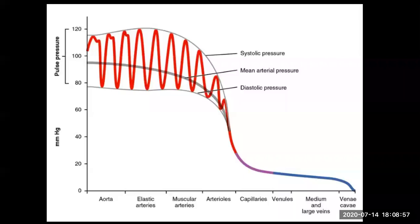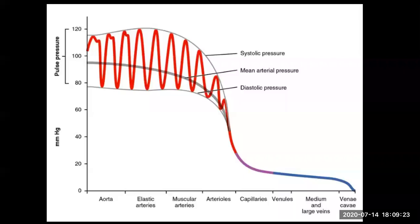We're just as interested in the pressures on the venous end, because if the pressure on the venous end is building up, it doesn't matter how good the blood pressure is at the arterial end. If the resistance at the other end is so high, you're going to get no flow through the vessels and perfusion will be poor. So vascular resistance on the venous end is just as important as the driving pressure on the arterial end when looking at tissue perfusion.